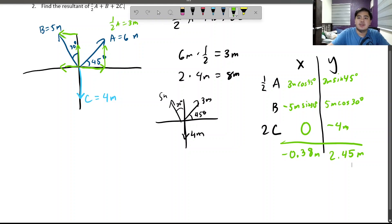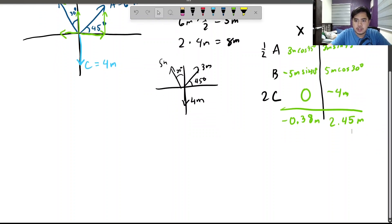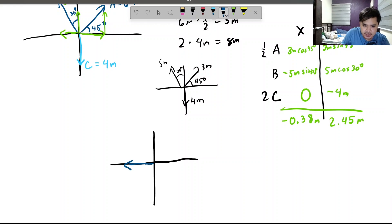All right. So, with this in mind, what is the vectors? Let's draw the grid again. The X component goes 0.38 meters to the west, since it is negative. And the Y component goes 2.45 meters to the north, since it is positive. So, it goes around here. That is the vector.